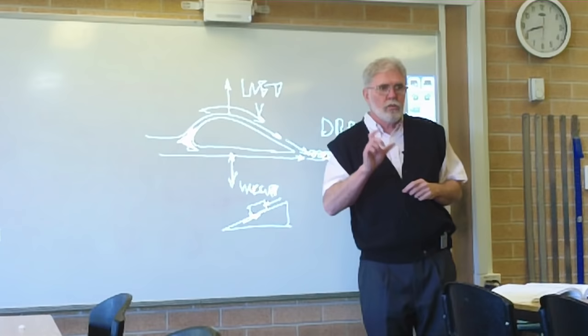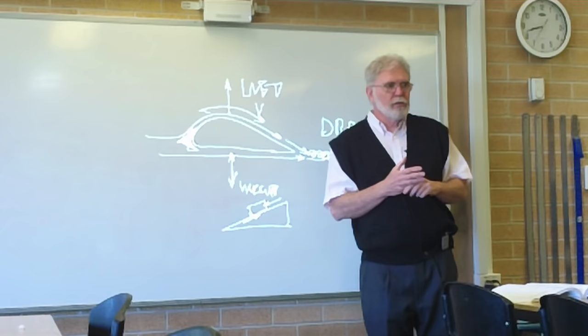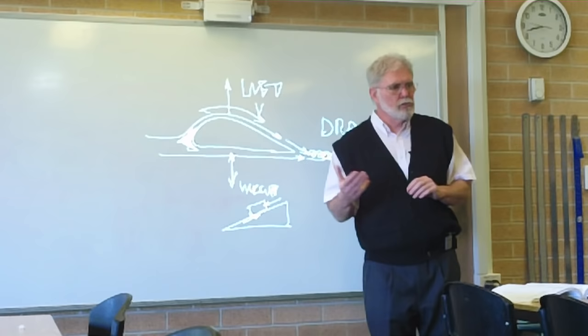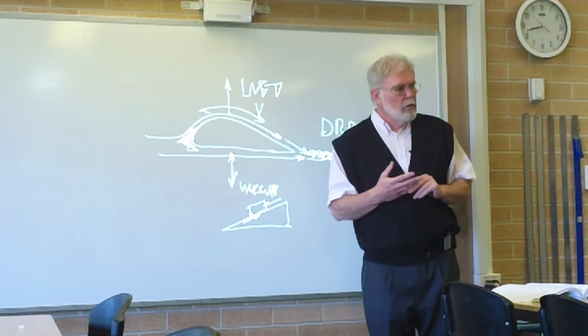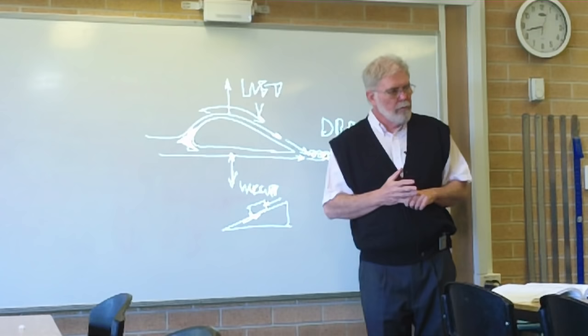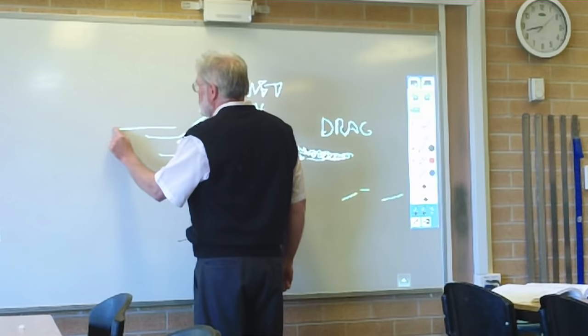Do you remember from the other day the name of the guy who came up with the principle? Bernoulli's principle — that if you have a fluid travelling faster, the pressure goes down. So the relationship between velocity and pressure is inverse. To get the lift you need, you need velocity of air over the top to get an inverse relationship with the pressure underneath. The term we use for it in flight is thrust.